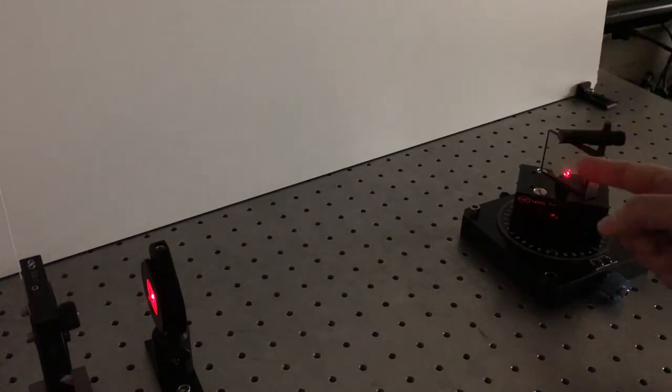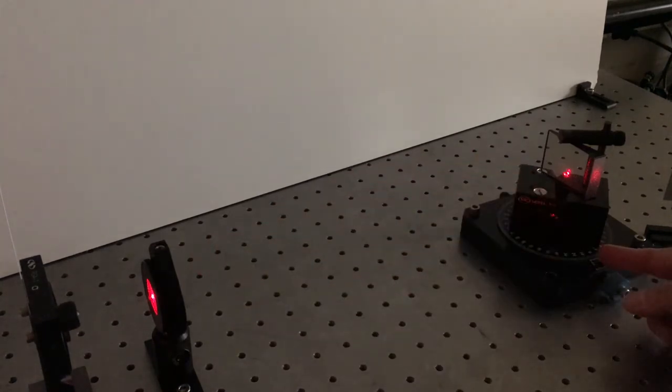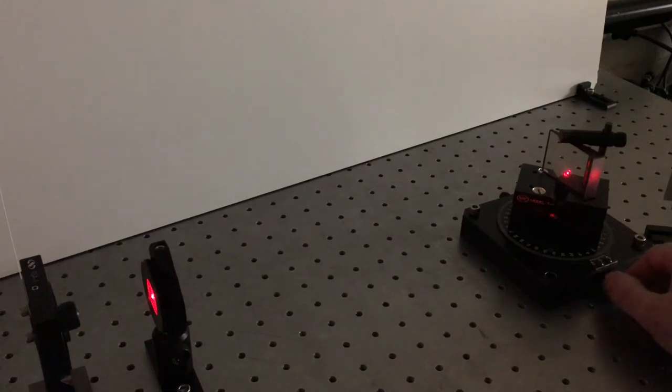Currently it's set up to send the reflection straight back where it came from in this direction at an angle of incidence at zero degrees. So I can read that off the scale here so I can tell how far I've rotated the prism. As I start rotating the prism, you can see on the screen over there there's a reflection spot.